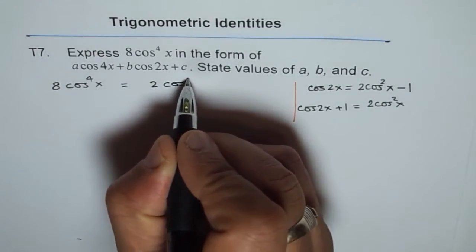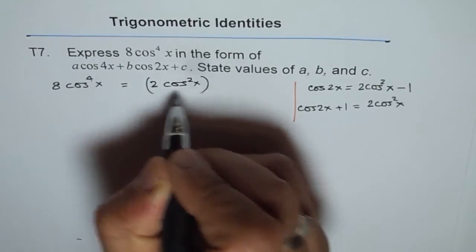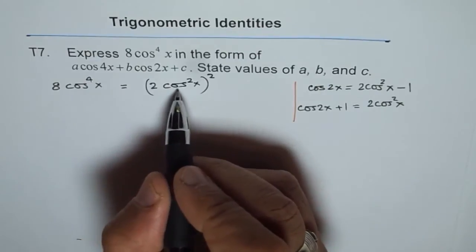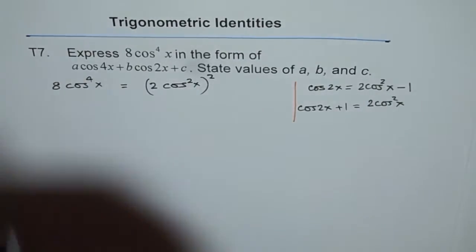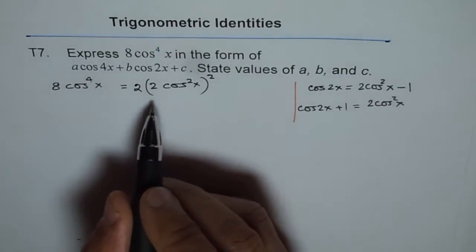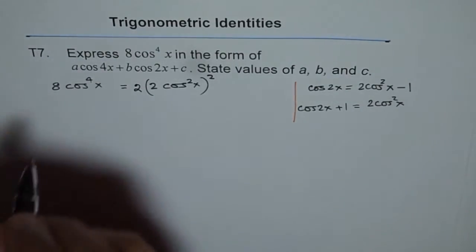2 cos square x whole square. Now 2 cos square x whole square gives us 4 times cos to the power of 4x, but we have 8 here. So let me write 2 outside. So that becomes equivalent to 8 cos to the power of 4x.